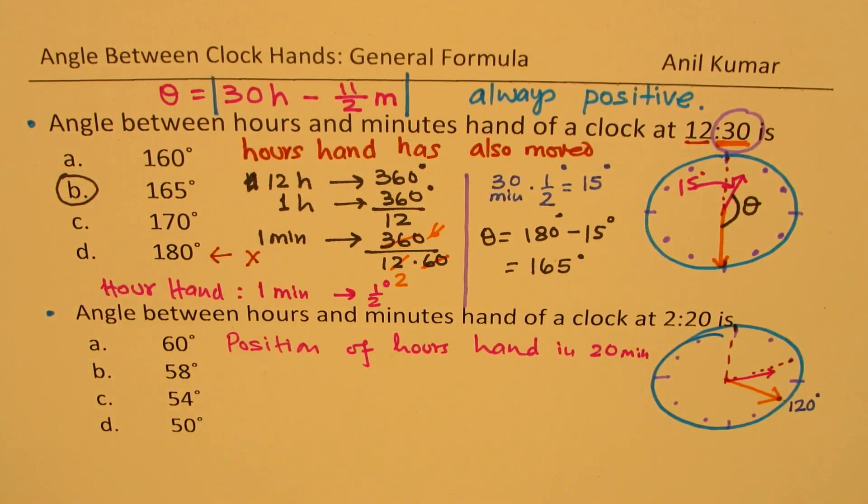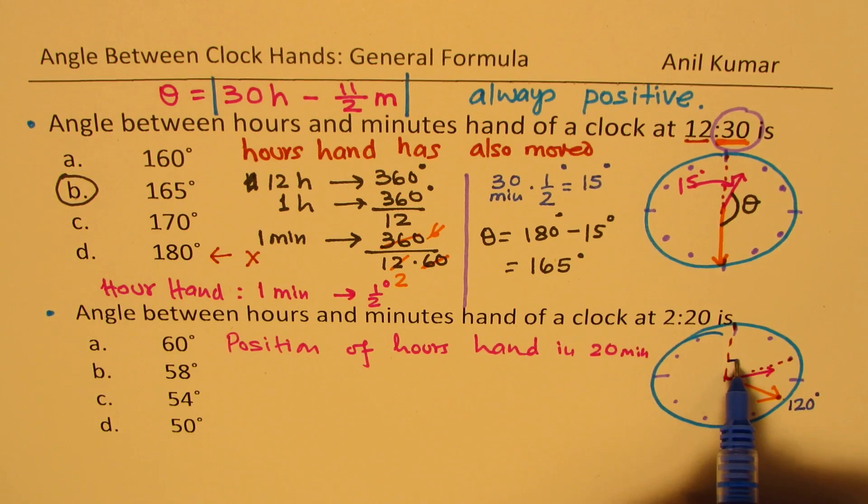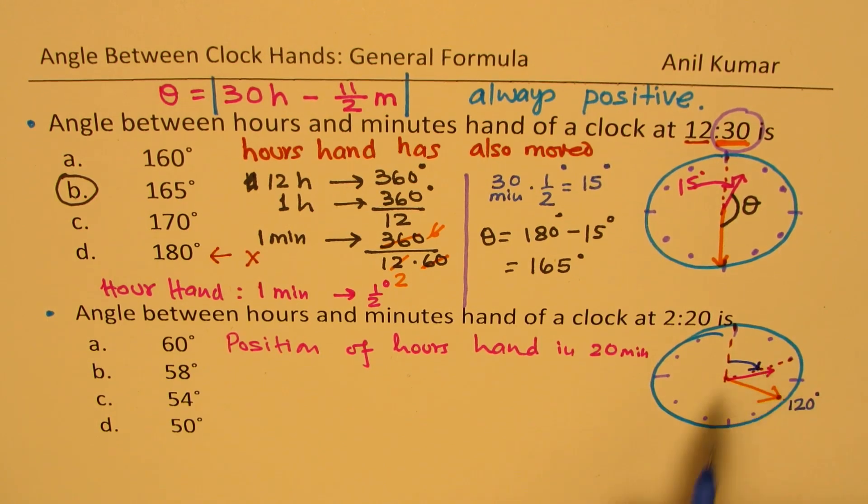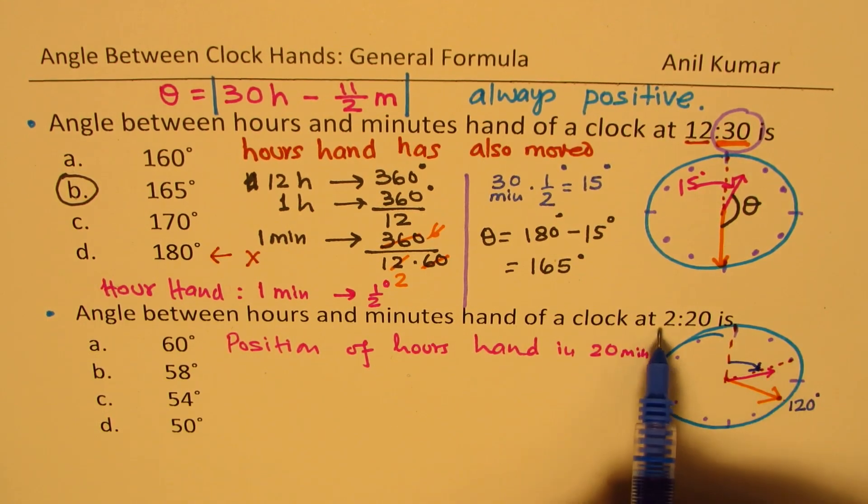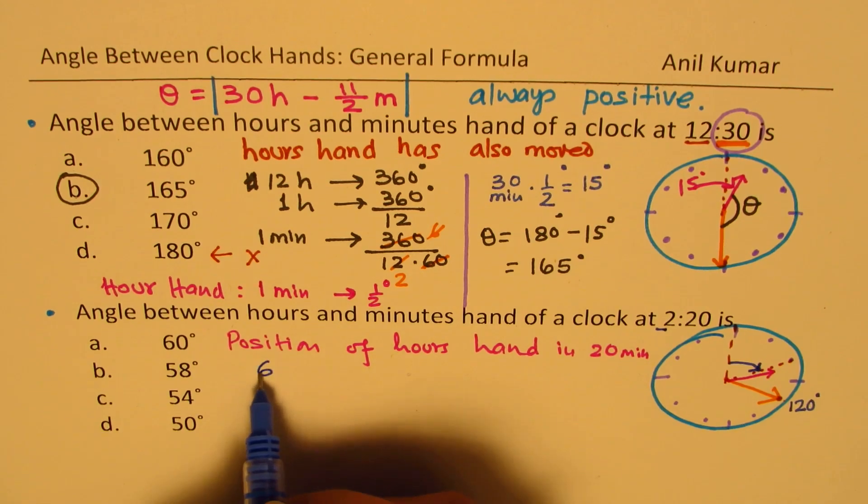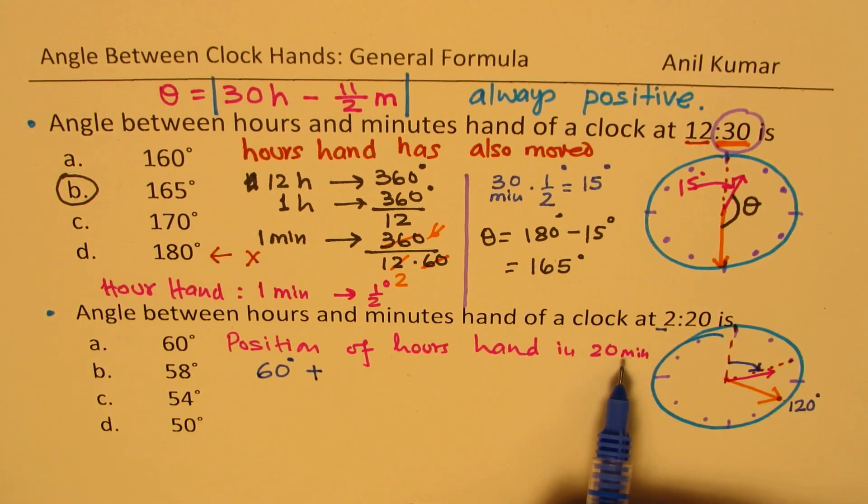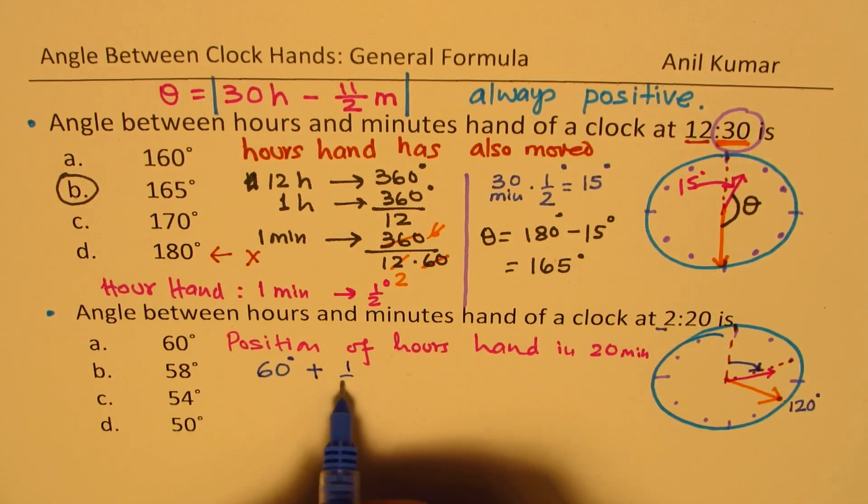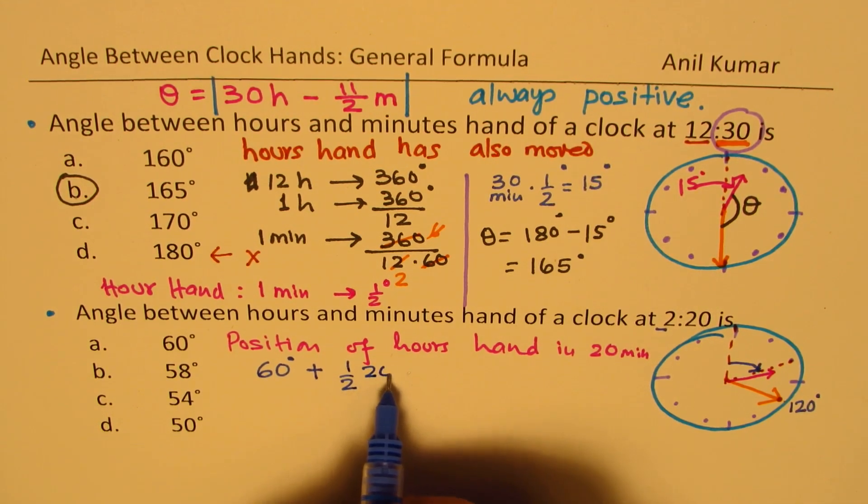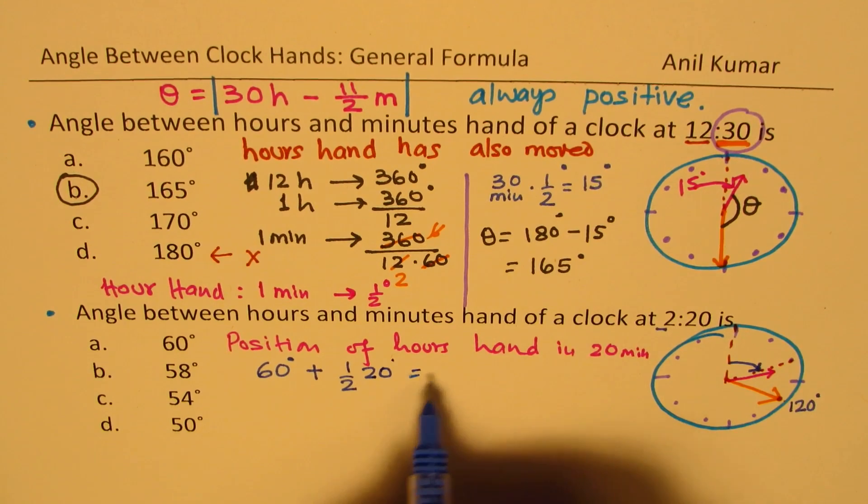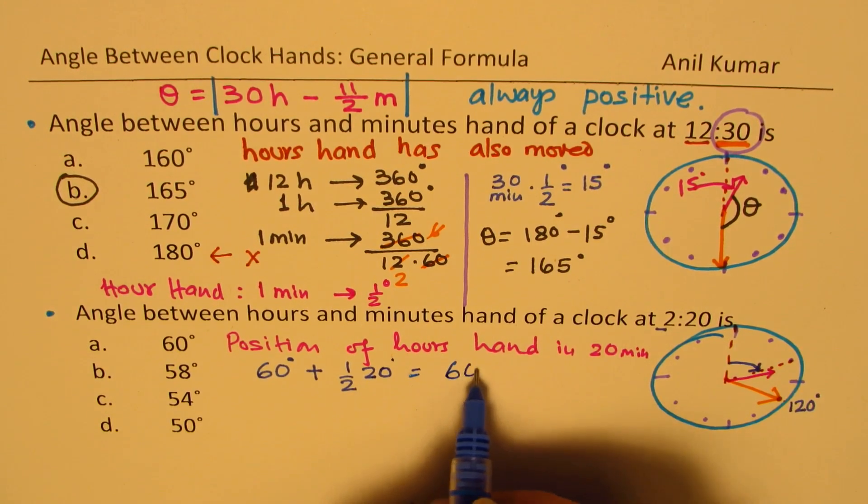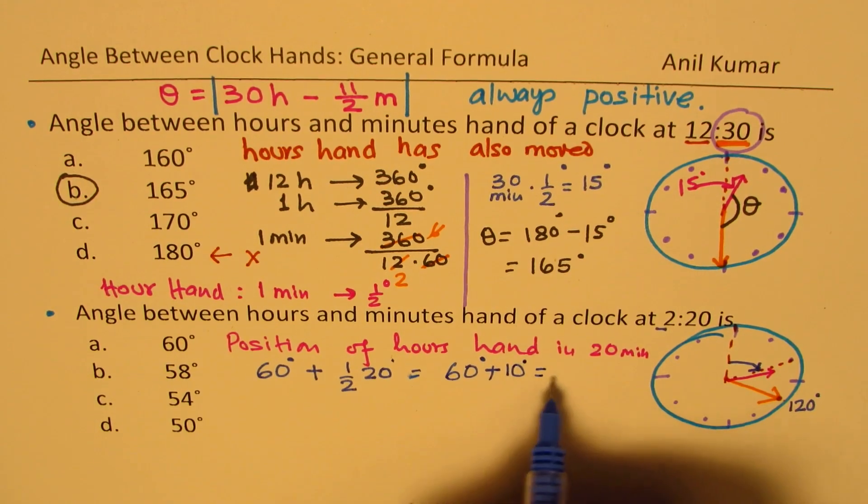Basically, that is the reason. So how much will it move? In 20 minutes, it is this much because it is already at 2. So at 2, which is 60 degrees plus every minute, it moves half a degree. So half of 20, which is 60 degrees plus 10. So it moved 10 degrees.